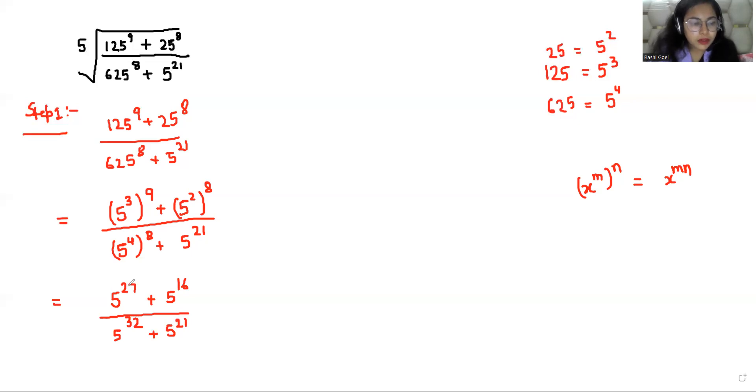Now the maximum power is 27 so I can take 5 power 16 as common in the numerator. So if I take 5 power 16 as common, I get 5 power 11 plus 1. And in the denominator, to make the same inside, I have to take 5 power 21 as common, so I get 5 power 11 plus 1. Now we can eliminate this. So what is left is 5 power 16 over 5 power 21.